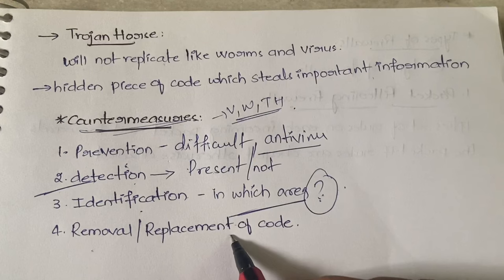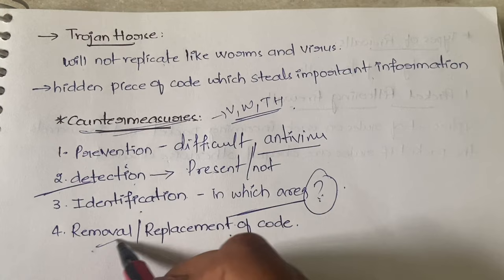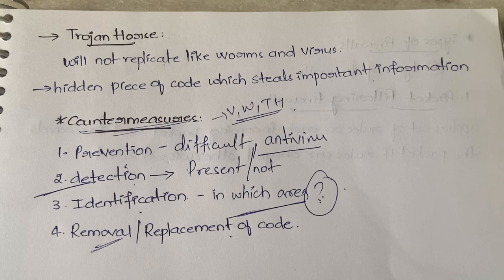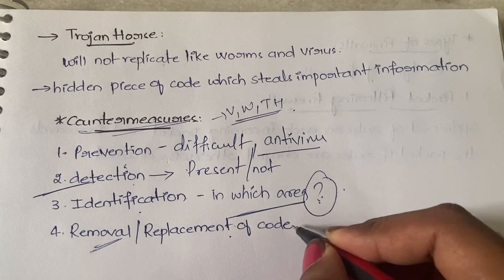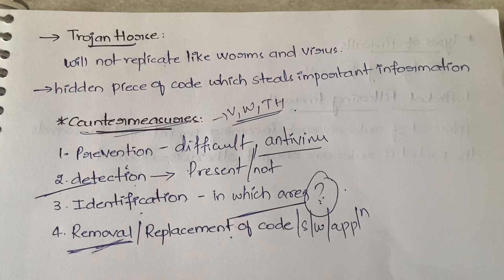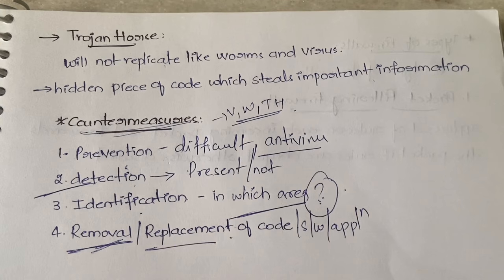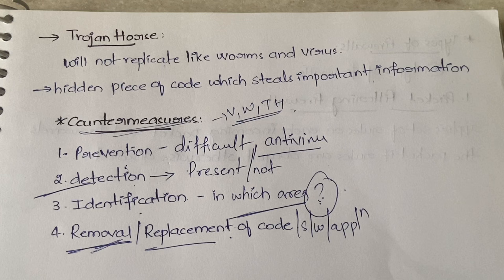Next comes removal or replacement of code. Complete removal of code is not always possible, because removing it may also remove the functionality. So instead, you can replace the infected code, software, or application with a new one. If removal has no major impact, you can remove it; otherwise, simply replace the infected code or application.